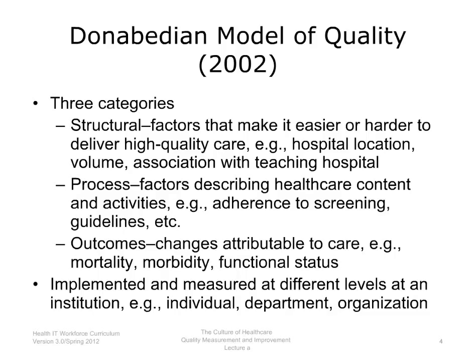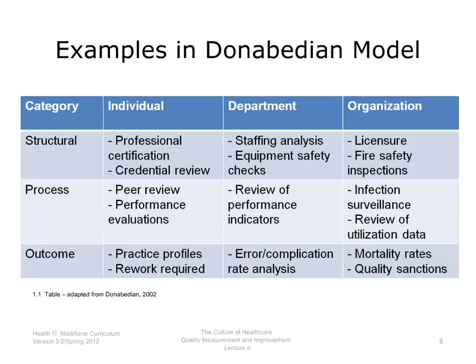A table lists the types of quality measures across rows and the levels at which quality is measured — individual, department, and organization — across columns. Structural measures include whether individuals are professionally certified, whether departments have appropriate staffing, and whether an organization has various licensures. Process measures include performance evaluation of individuals, monitoring productivity, reviewing performance indicators at the department level, how much screening has been done, and stated adherence to guidelines. Outcomes include practice profiles of individuals' errors at departmental levels, and mortality rates and quality sanctions at organizational levels.